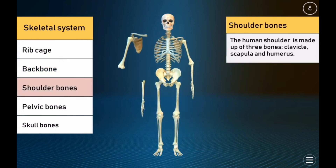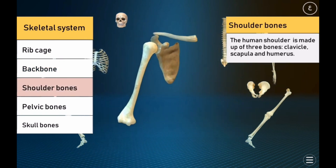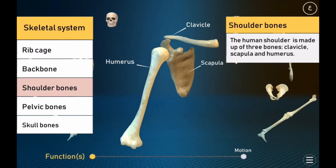Shoulder bones. The human shoulder is made up of three bones: the clavicle, scapula, and humerus.